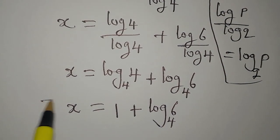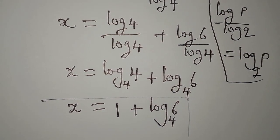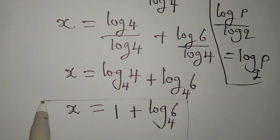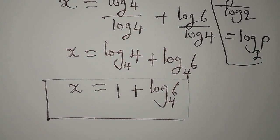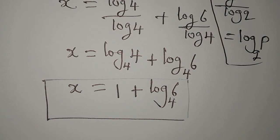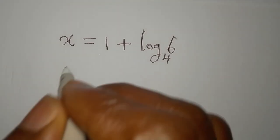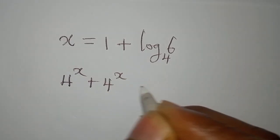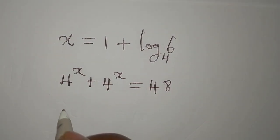So x equals 1 plus log 6 to base 4. That is our value of x. Now let's verify this quickly. The original equation is 4 to the power of x plus 4 to the power of x equals 48.